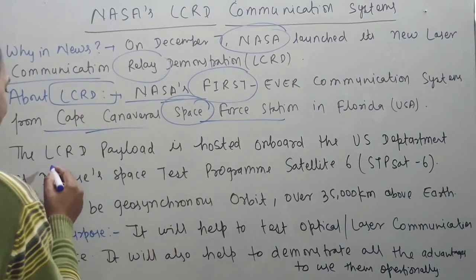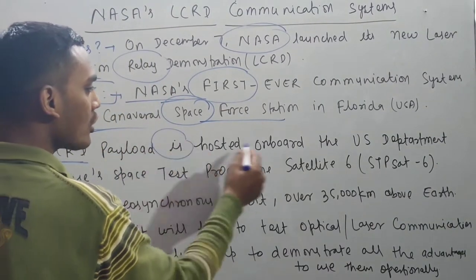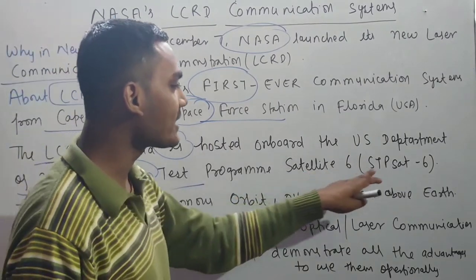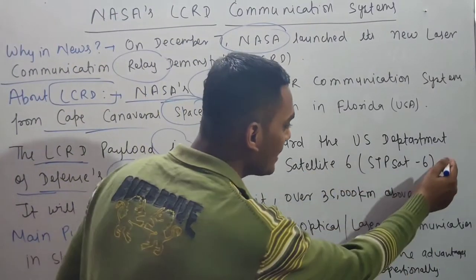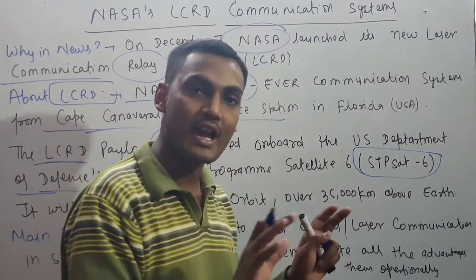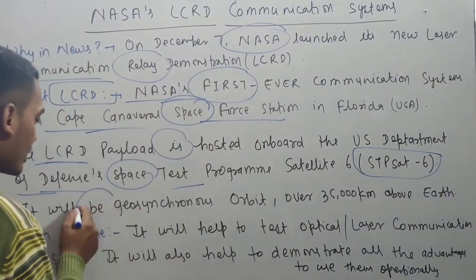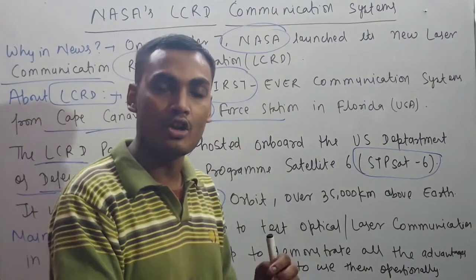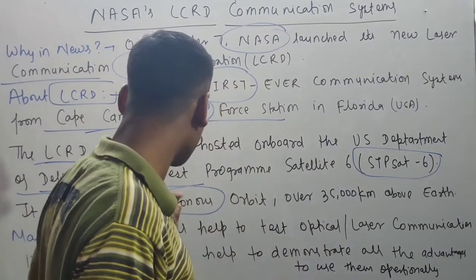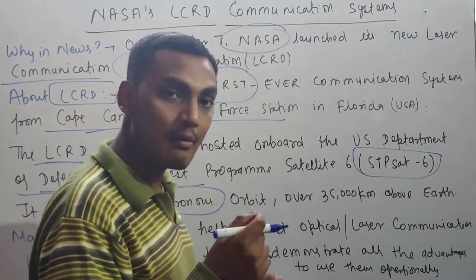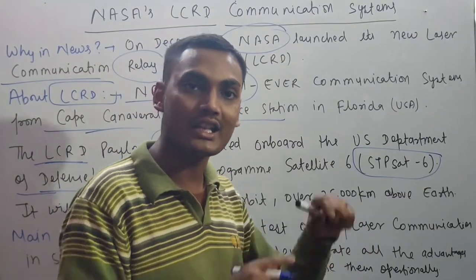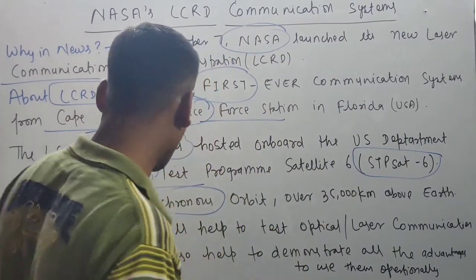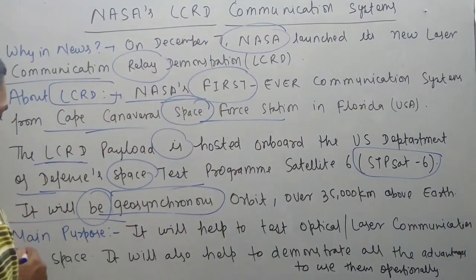The LCRD payload is hosted on board the US Department of Defense Space Test Program Satellite, STP-Sat 6. It will go into geosynchronous orbit, which is above 35,000 kilometers from Earth — above the low Earth orbit and medium orbit levels.